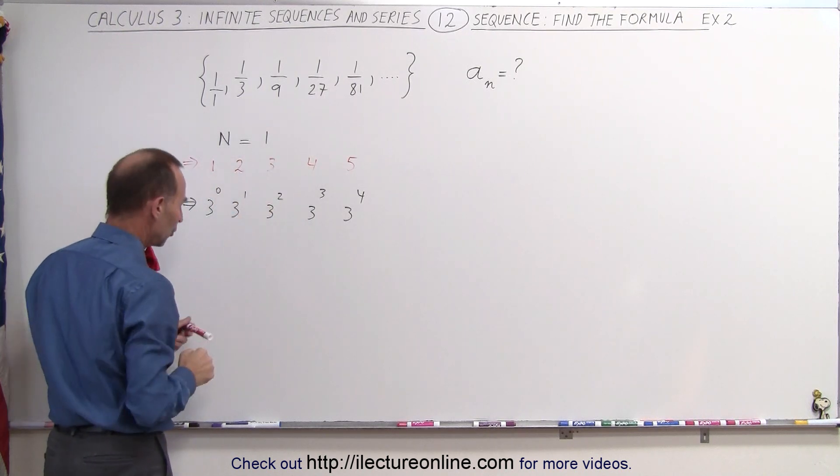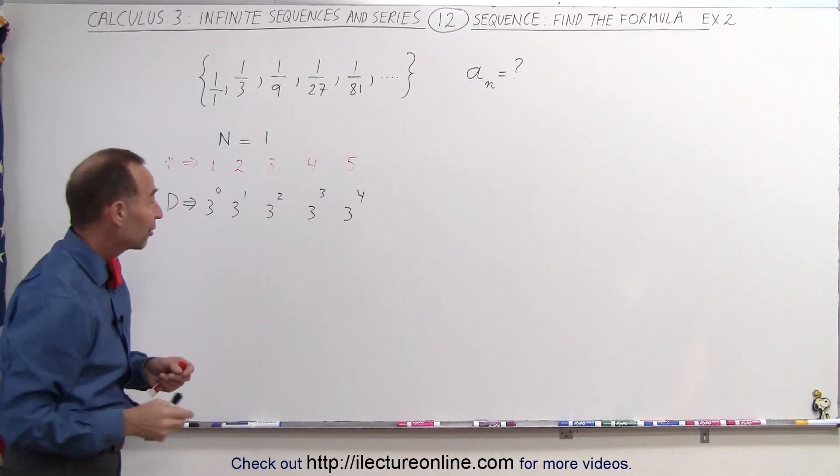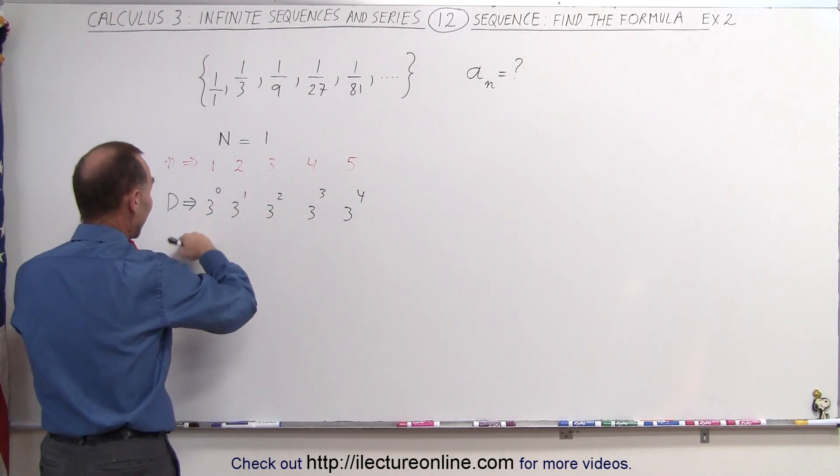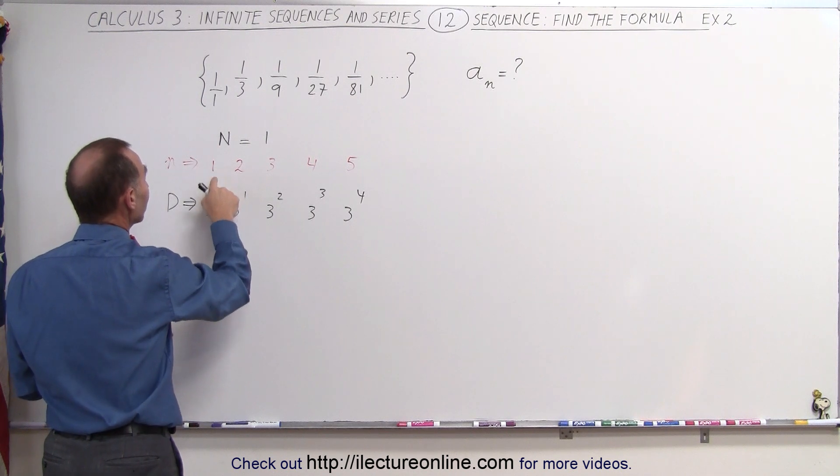If n is equal to 3, the exponent is 2. In other words, the way we express the denominators in terms of n would be simply to subtract 1 from n to get the exponent.